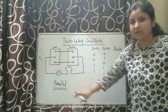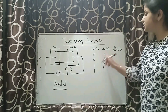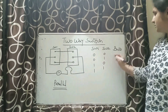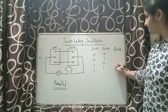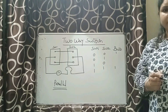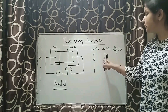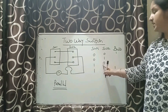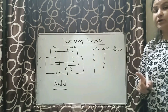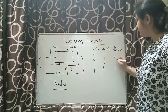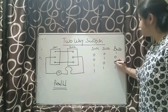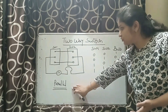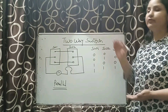Now in the case of parallel connection, when the position of the switches is the same — 00 or 11 — the bulb is going to glow, that means 1. But if the position of the switches is opposite — 01 or 10 — the bulb is not going to glow, that means 0. So this is the truth table of parallel connections in the case of two-way switches.